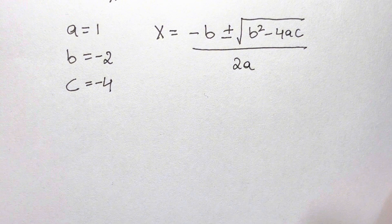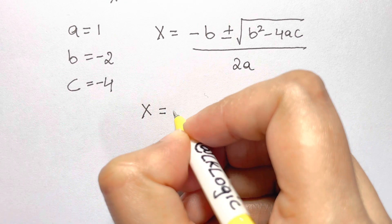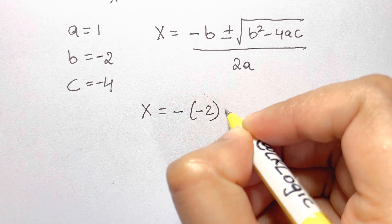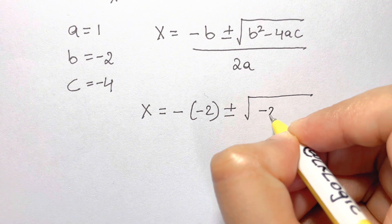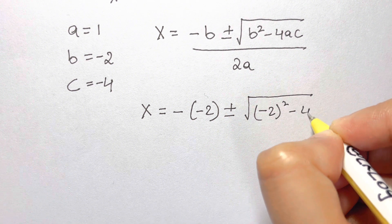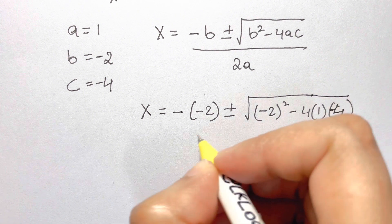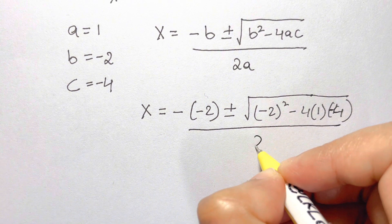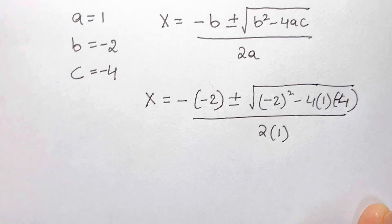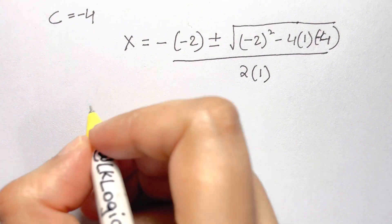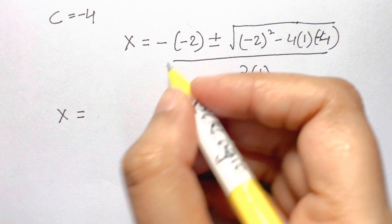Let's substitute our values. x equals negative of negative 2, plus or minus the square root of (negative 2) squared minus 4 times 1 times negative 4, all over 2 times 1.